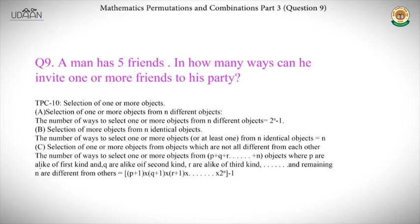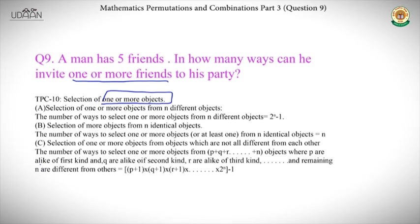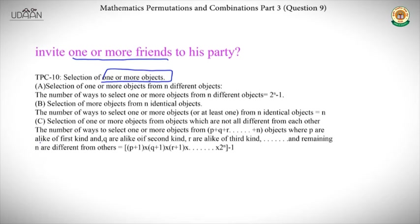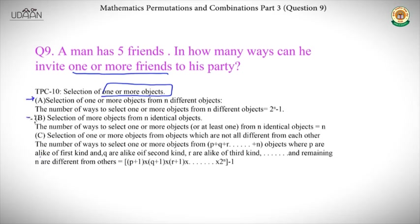We move to question number nine: a man has five friends — in how many ways can he invite one or more friends to his party? This type of problem involves a constraint of 'one or more objects.' There are three variations of this type of problem depending on whether the objects are different, identical, or a mix.